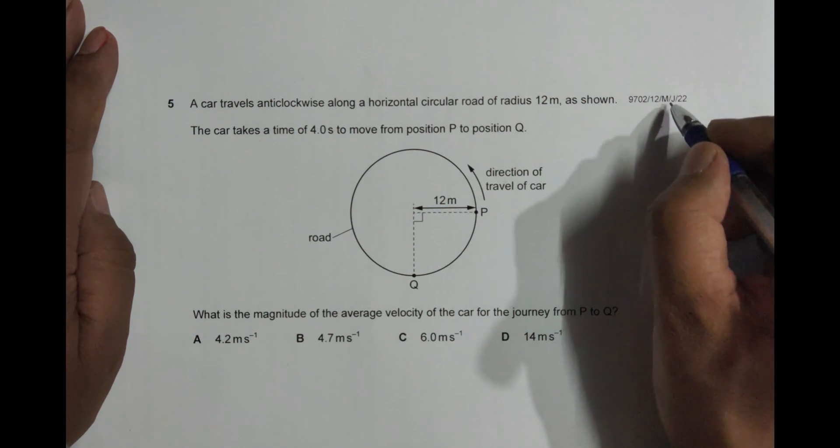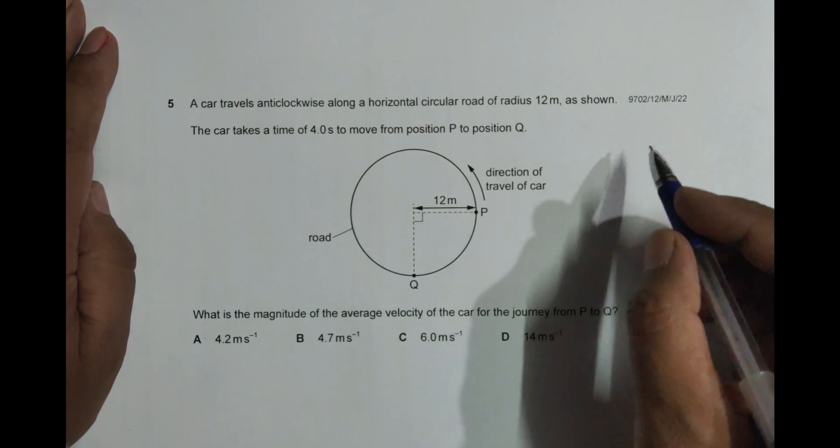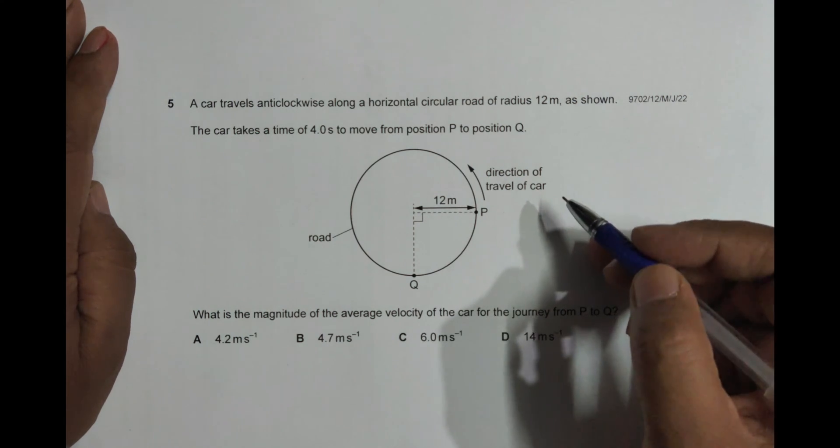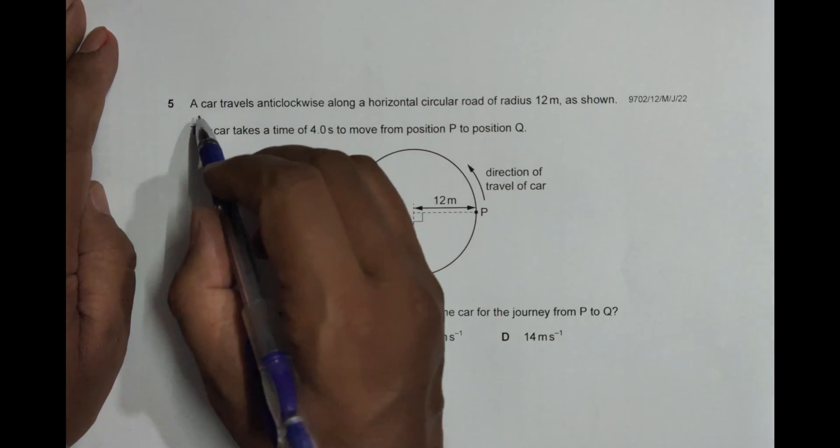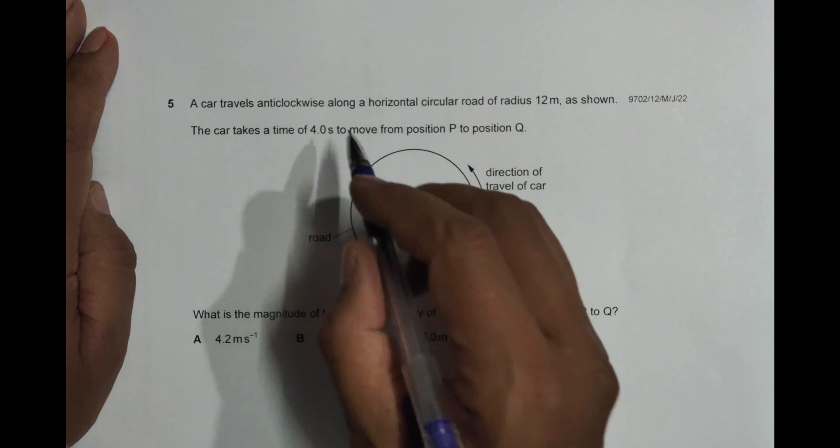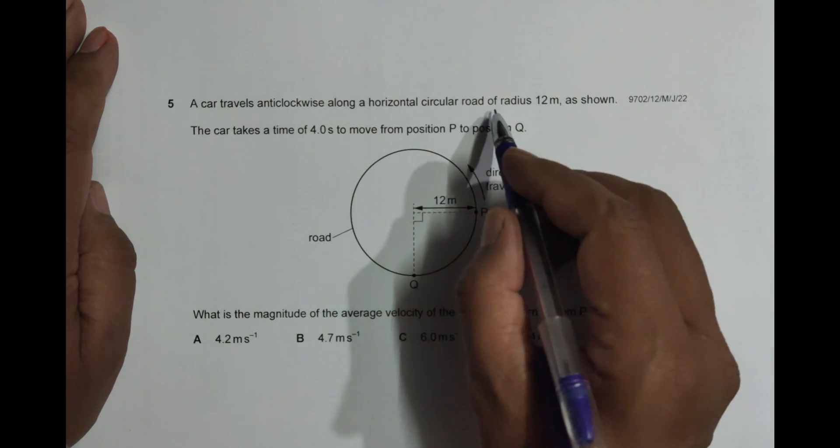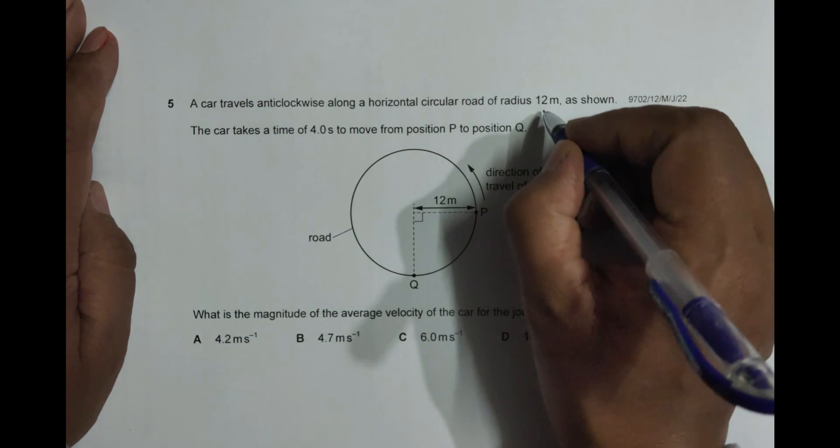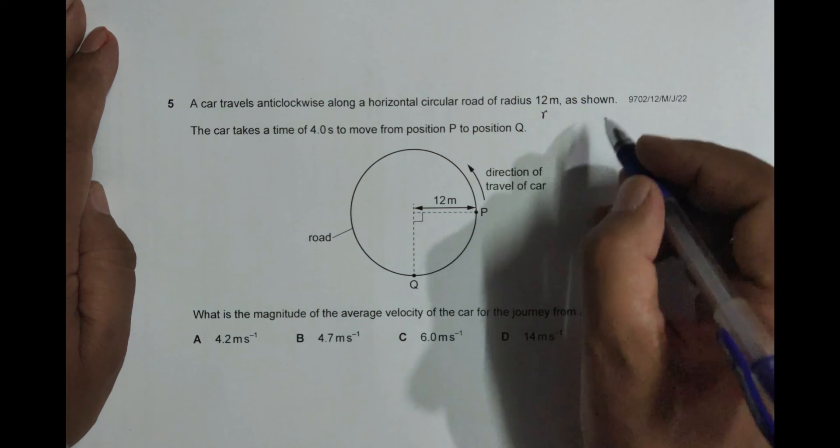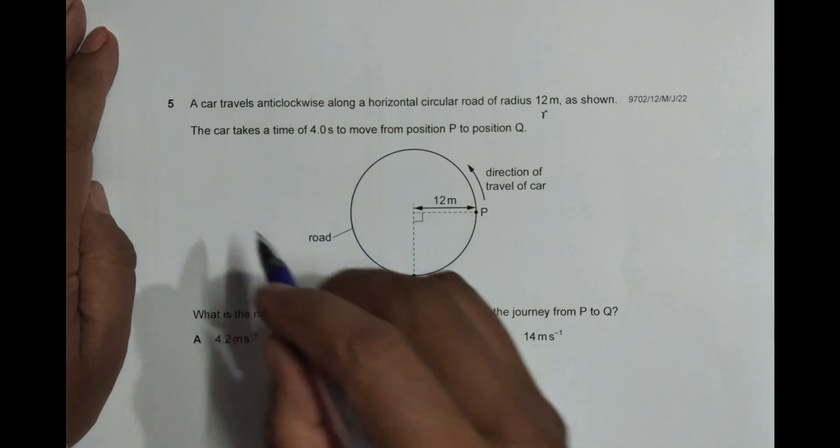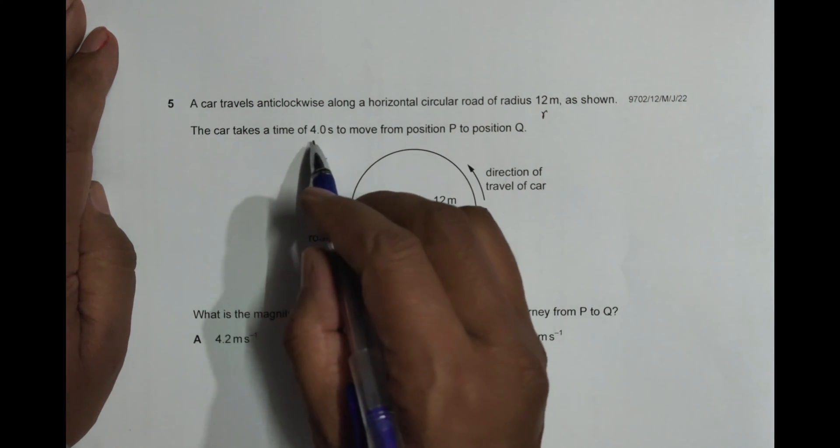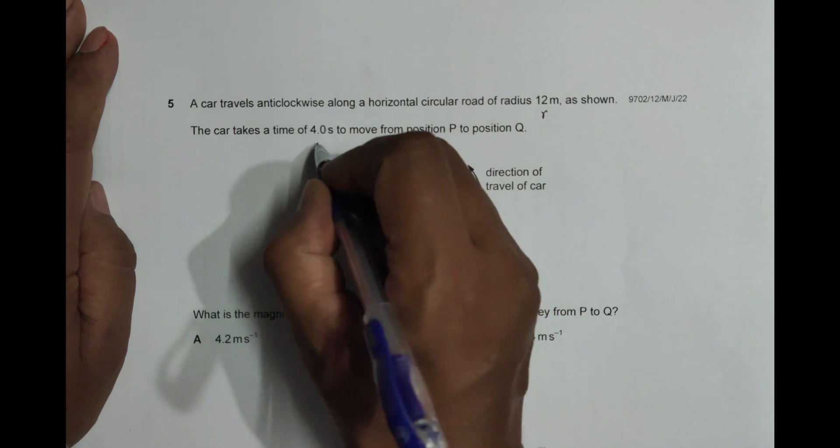Hello folks, this is 2022 May-June paper 1-2, question number 5. This question is concerned about kinematics. It says a car travels anti-clockwise along a horizontal circular road of radius 12 meters. This is R as shown, so anti-clockwise direction like this. The car takes a time of 4.0 seconds.